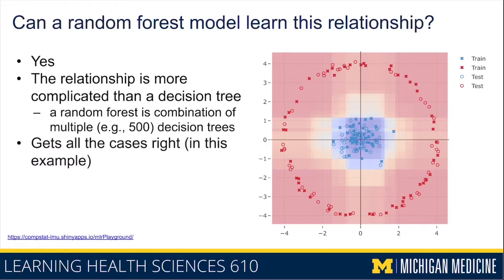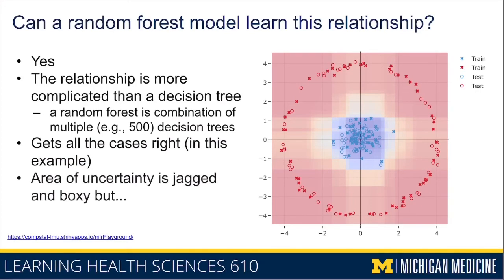With this set of parameters, the random forest actually gets all cases right. But the area of uncertainty, although more round than the single decision tree, is still pretty jagged and boxy. So the random forest learns what looks like a better relationship, possibly more useful than the decision tree, but still not quite what I was envisioning when I first showed the data set.